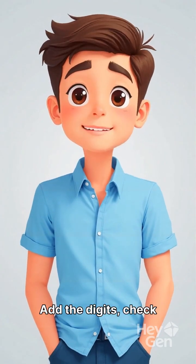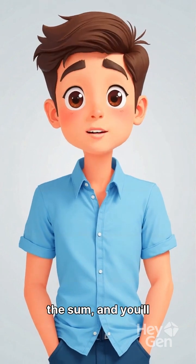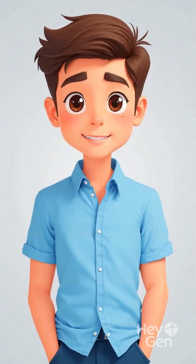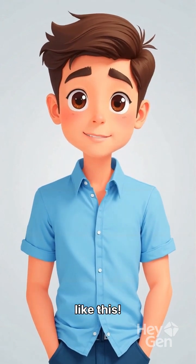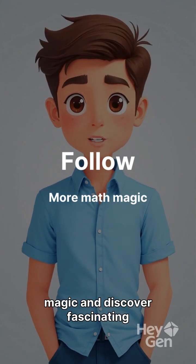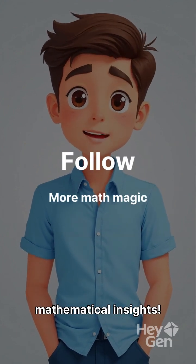That's the digit sum rule. Add the digits, check the sum, and you'll spot divisibility in seconds. Math has cool shortcuts like this. Follow for more math magic and discover fascinating mathematical insights.